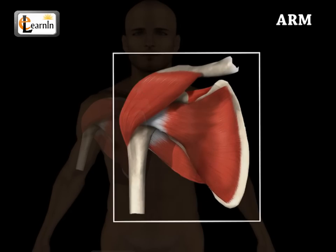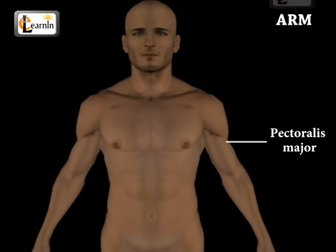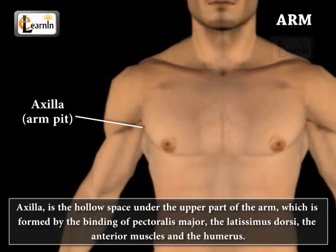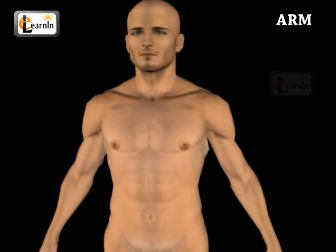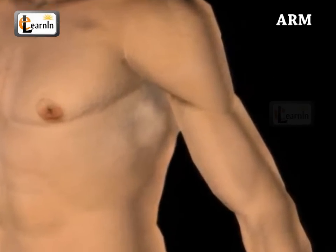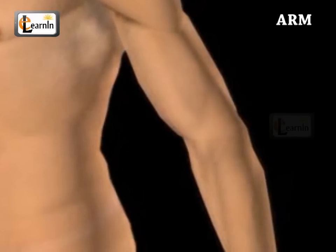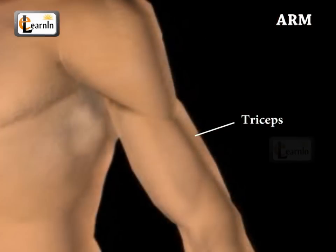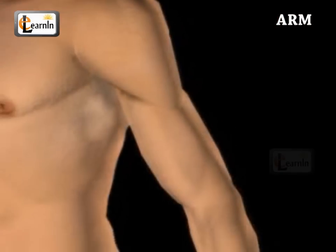The front fold of the armpit is the pectoralis major. The armpit, which is known as the axilla, is a hollow space under the upper part of the arm, formed by the binding of the pectoralis major, the latissimus dorsi, the anterior muscles, and the humerus. The human body also has biceps, which help in the flexibility of the arm and run from the posterior shoulder to the elbow joint. The arms can be straightened with the help of triceps, which run from the shoulder to the elbow at the backside.